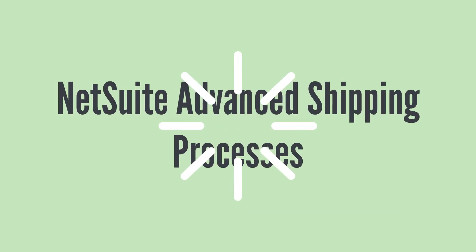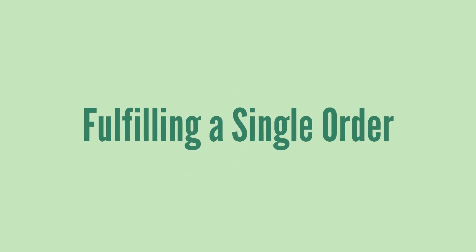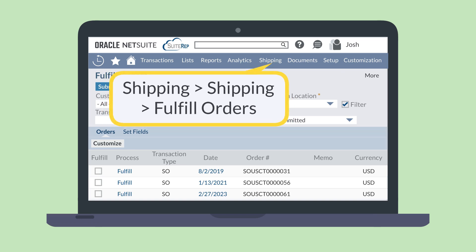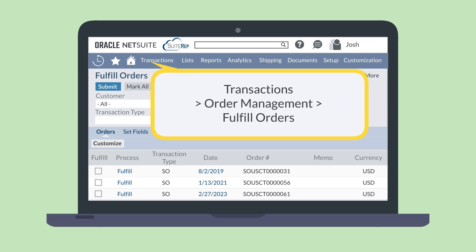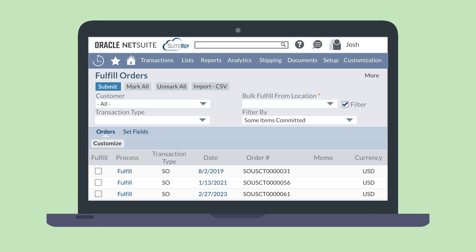Let's take a quick look at the two main advanced shipping processes: fulfilling a single order and fulfilling multiple orders. To fulfill a single sales order when Advanced Shipping has been enabled, start by navigating to the Fulfill Orders page. For you, this might be housed under Shipping, Shipping, Fulfill Orders, or Transactions, Order Management, Fulfill Orders, depending on whether or not you also use Advanced Billing.